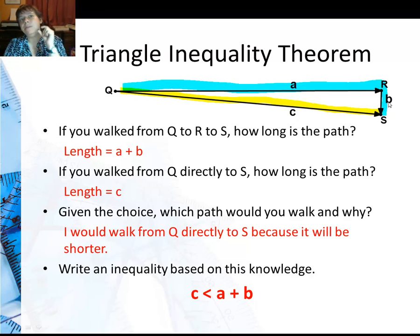Even if b were just a little bit, say a few feet, you're still going to go directly given the option instead of going a few feet out of your way. So that's where this inequality comes from.